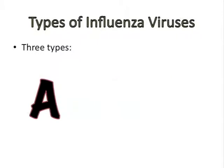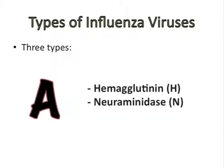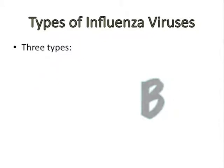Influenza A viruses are divided into subtypes based on the two proteins present on the surface of the virus: hemagglutinin and neuraminidase. Then they are further broken down into different strains. Influenza B viruses are not divided into subtypes; however, they can be broken down into various strains.